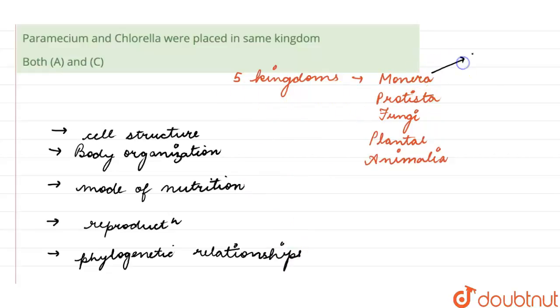In which all the prokaryotes were kept in the kingdom Monera. So Monera solely had all the bacteria.